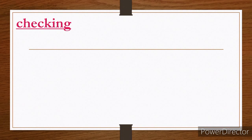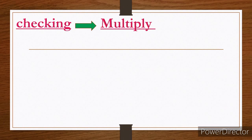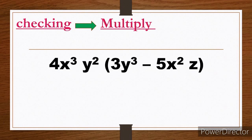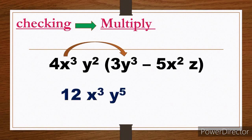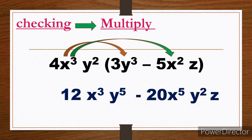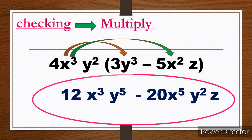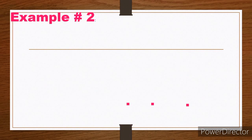Let us check our answer. To check, we simply multiply the factored form back out. 4x³y² × 3y³ = 12x³y⁵. And 4x³y² × (−5x²z) = −20x⁵y²z. When multiplying, we add the exponents. This confirms our factored form is correct.